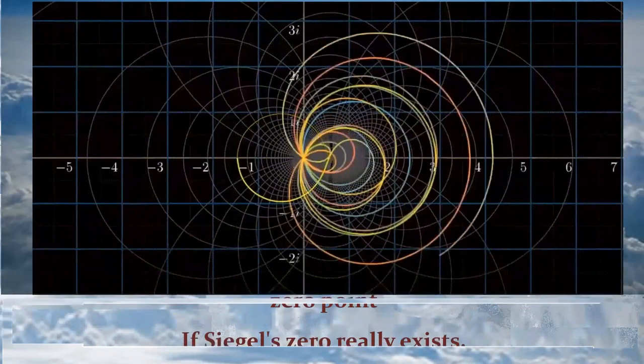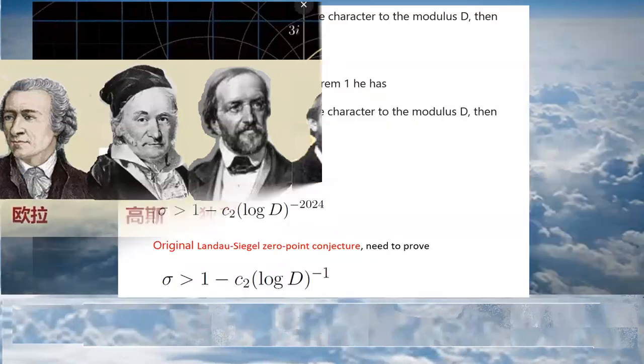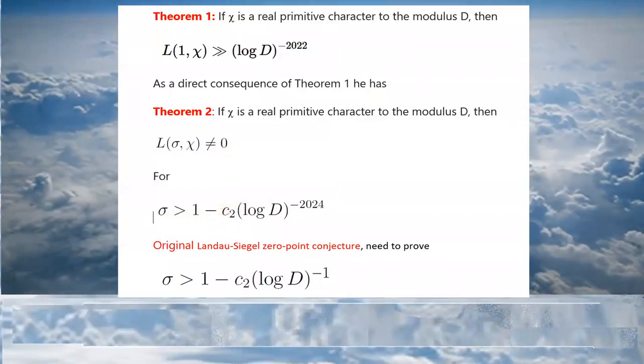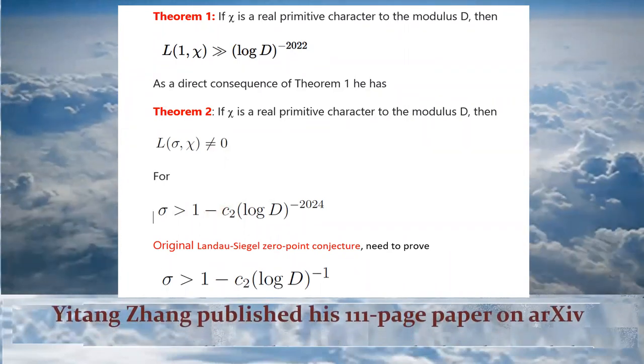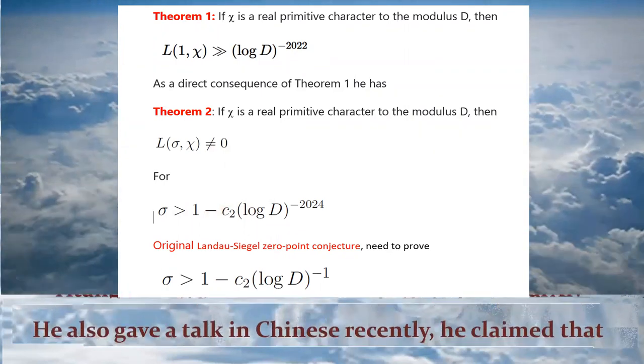Several days ago, Yi Tang Zhang published his 111-page paper on arXiv. He also gave a talk in Chinese recently. He claimed that he essentially solved Landau-Siegel zero point conjecture problem.